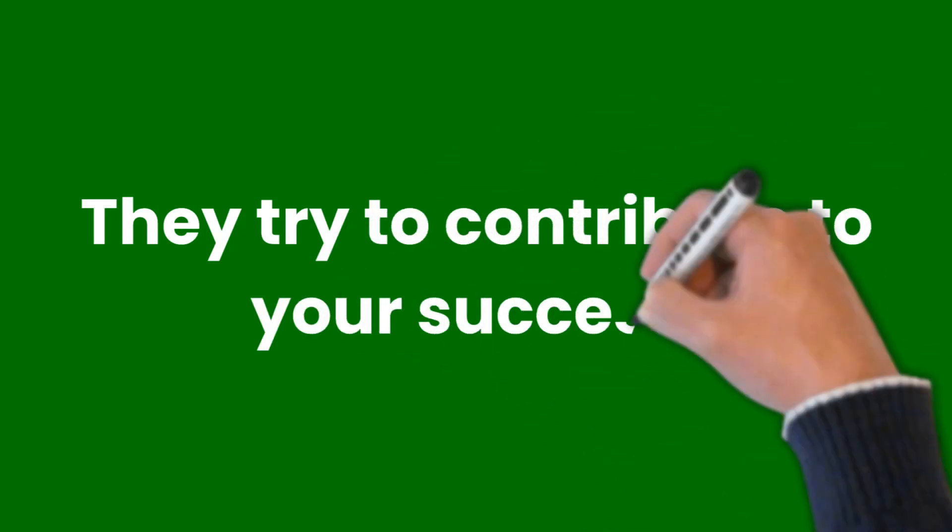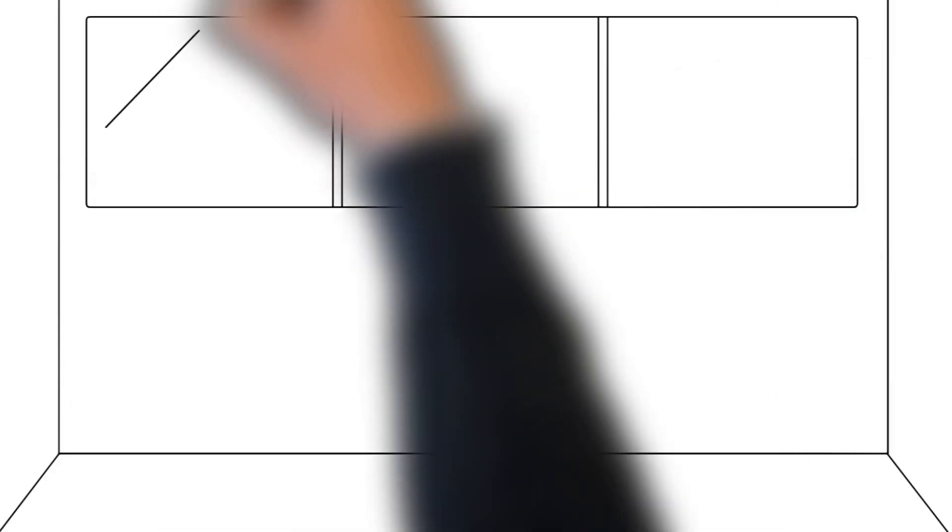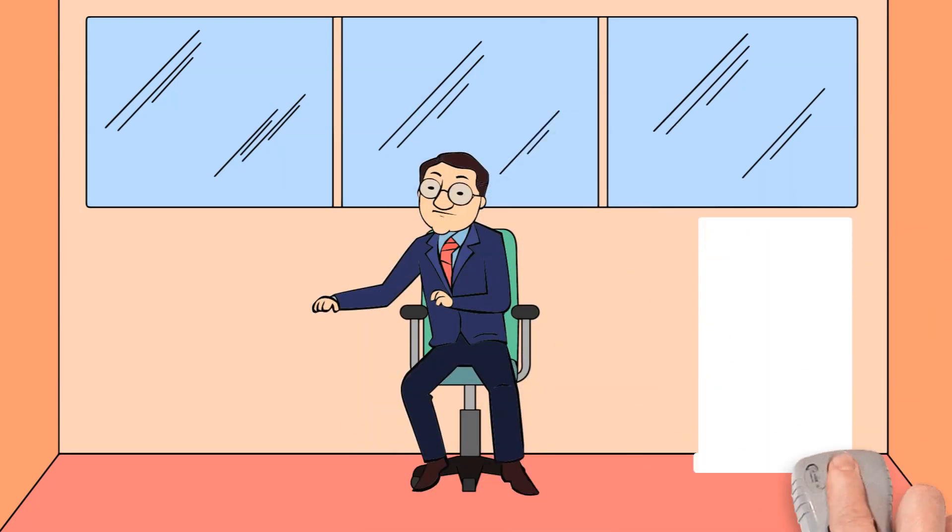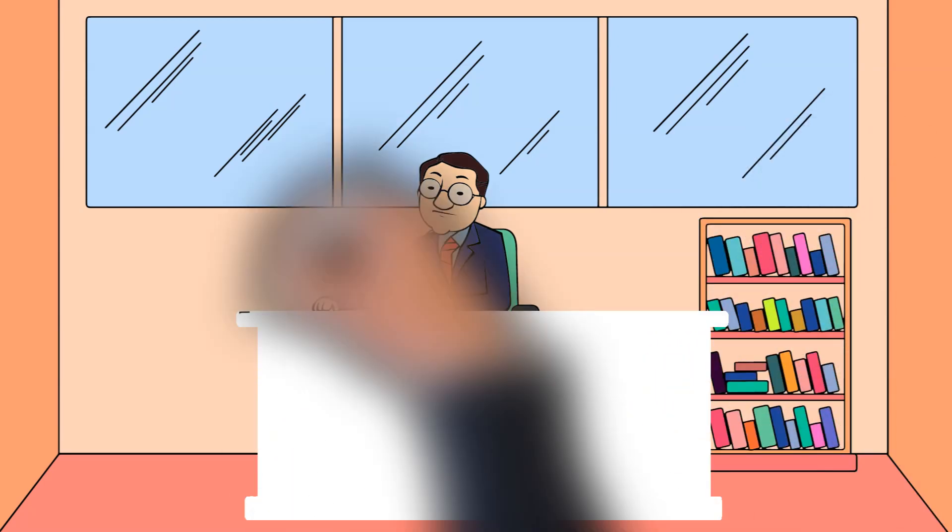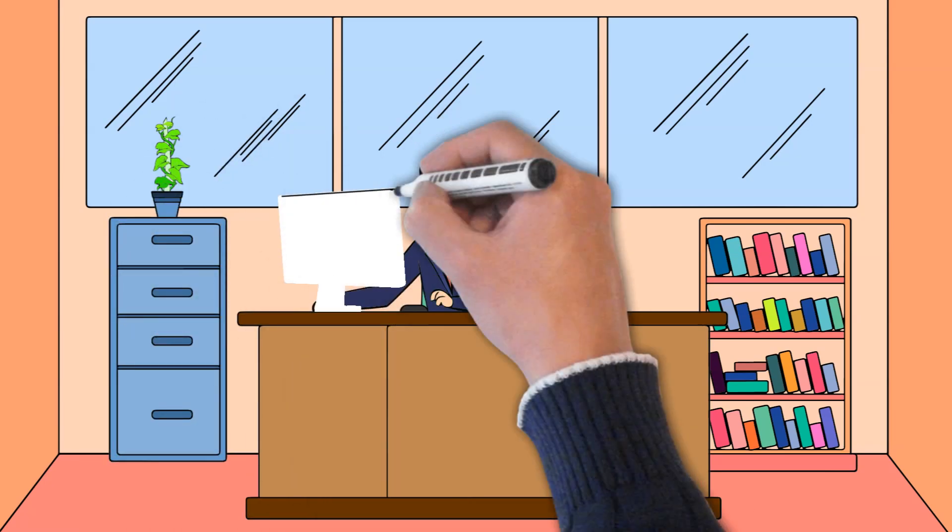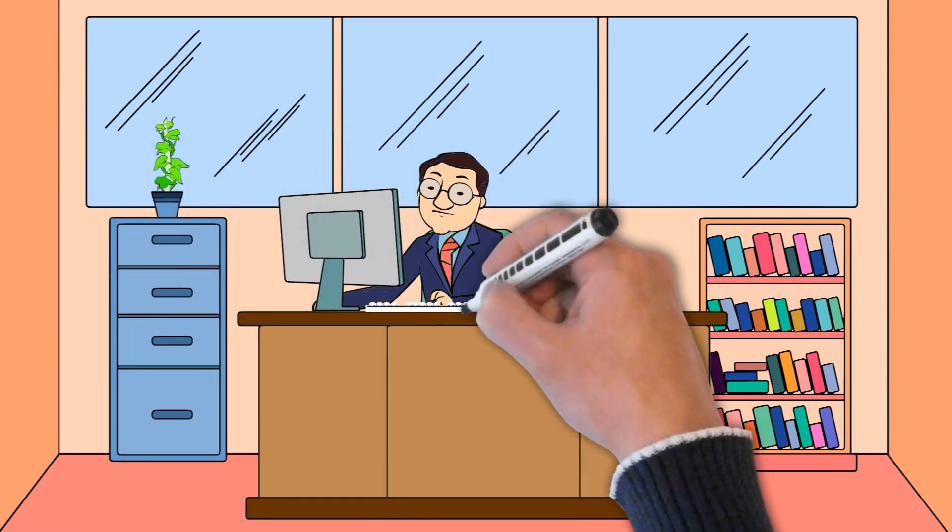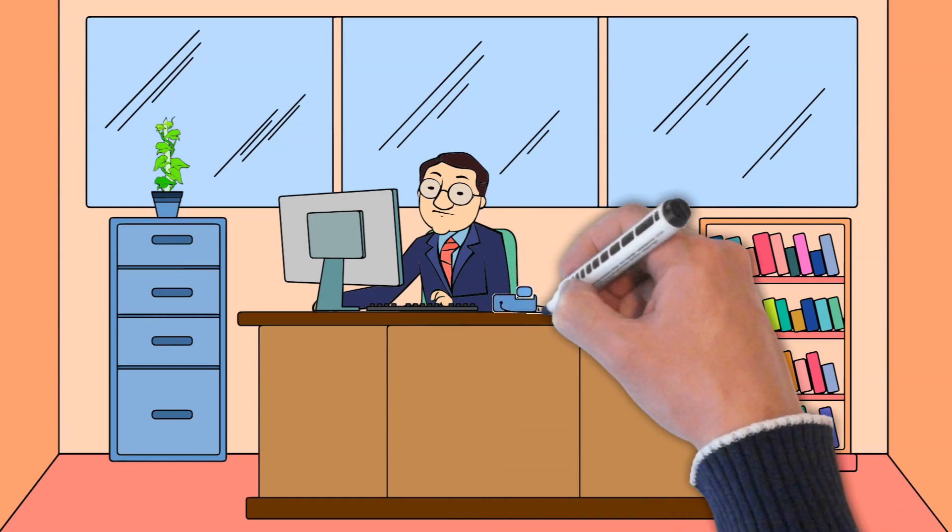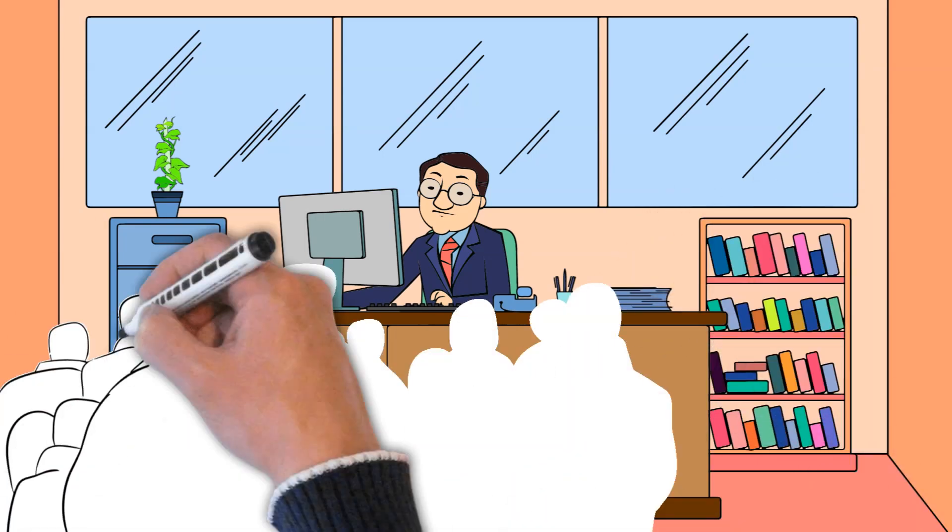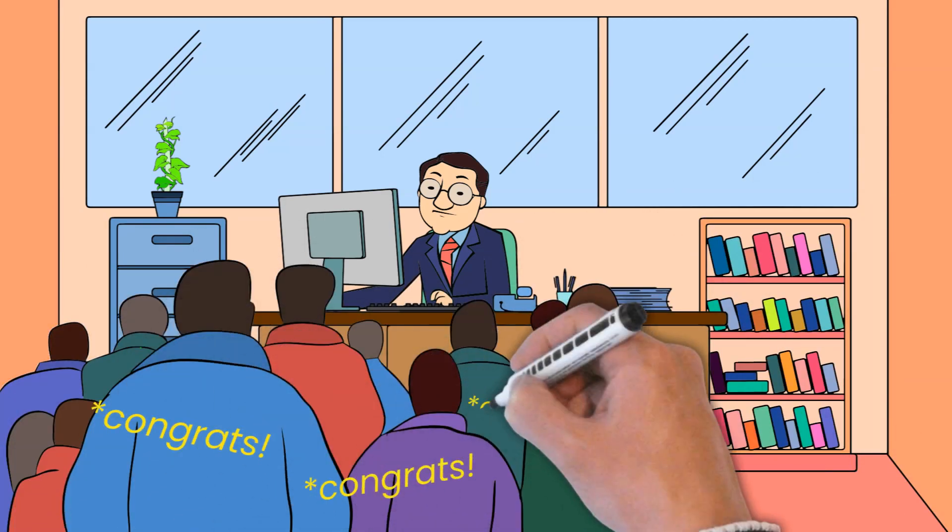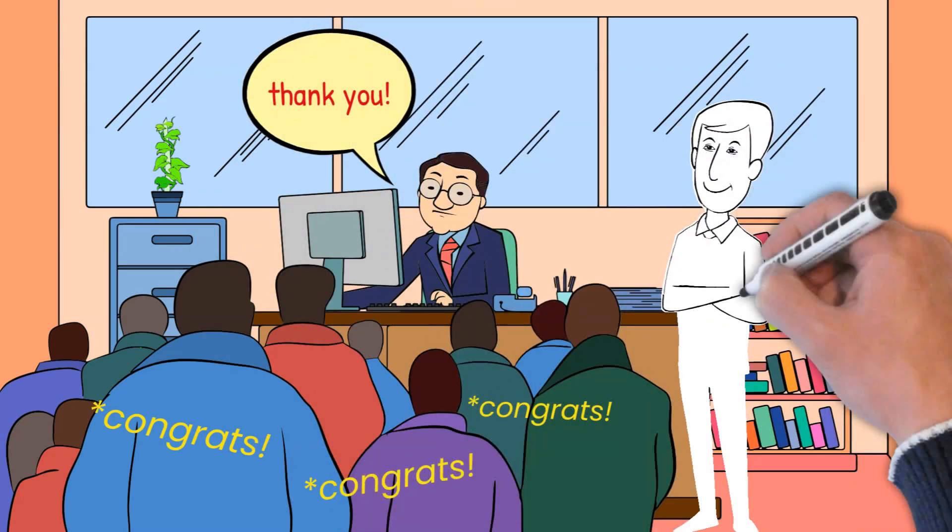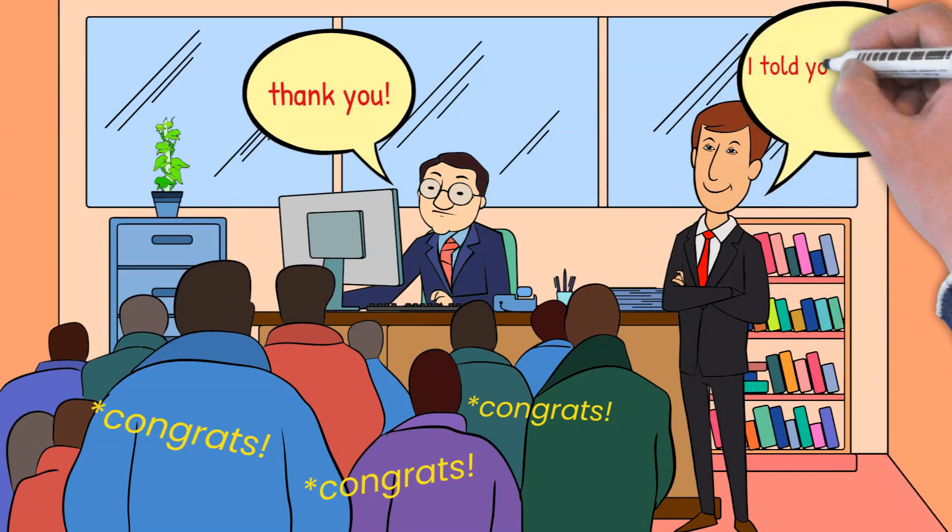They try to contribute to your success. Envious people will not harm your success, they'll try to take credit for it. While congratulating you, they'll make it seem as though they had a substantial influence on your accomplishments and success. If your company chooses your recommendation for the next large project, a jealous coworker may try to claim credit for it. They utilize statements like 'I told you to choose that notion' and 'Remember when I told you how to tackle that problem you had?' You will be able to recognize the difference. Even though it seems to be helpful, your successes will encourage someone who cares about you. Someone who is jealous will point out their contribution to your success.